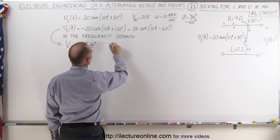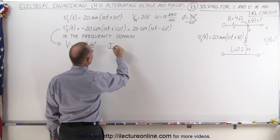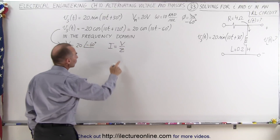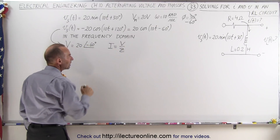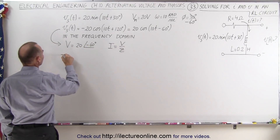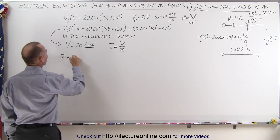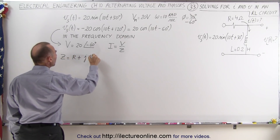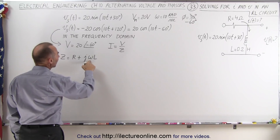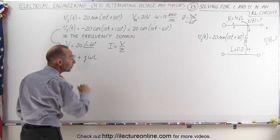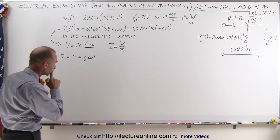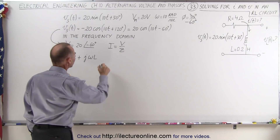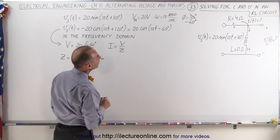We realize that the current I is going to be equal to V divided by the impedance, which means we also have to find the expression for the impedance in the circuit. The impedance Z is equal to R plus j times omega L — we have plus j·omega·L because we're dealing with an inductor. Omega·L is the inductive reactance.